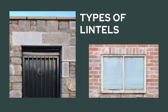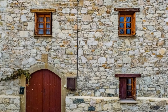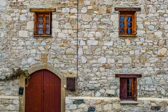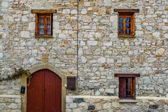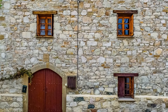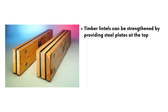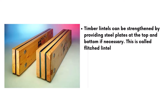Types of lintels used in construction. Wooden or timber lintels are the oldest type, mostly used in regions with high availability of timber. Timber lintels are either constructed as a single piece or a combination of two pieces. They can be strengthened by providing steel plates at the top and bottom if necessary, and this is called flitched lintels. Timber used for lintel construction must be strong and sound.